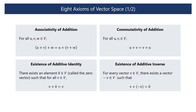Additionally, vector spaces must satisfy the following eight axioms. This slide shows only four of them, and the remaining four will be shown in the next slide.